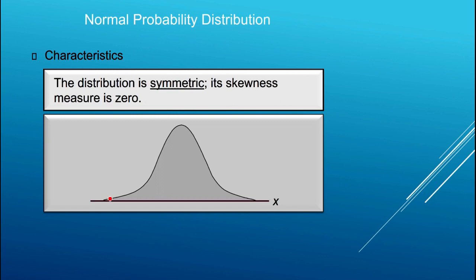Here are some characteristics of the normal probability distribution. Any normal probability distribution is going to be perfectly symmetric. The mean is right in the middle, and there's as much area on the left as on the right. The area under the curve on the right-hand side of the mean equals the area on the left-hand side — so there's no skewness whatsoever, and the skewness measure is zero.